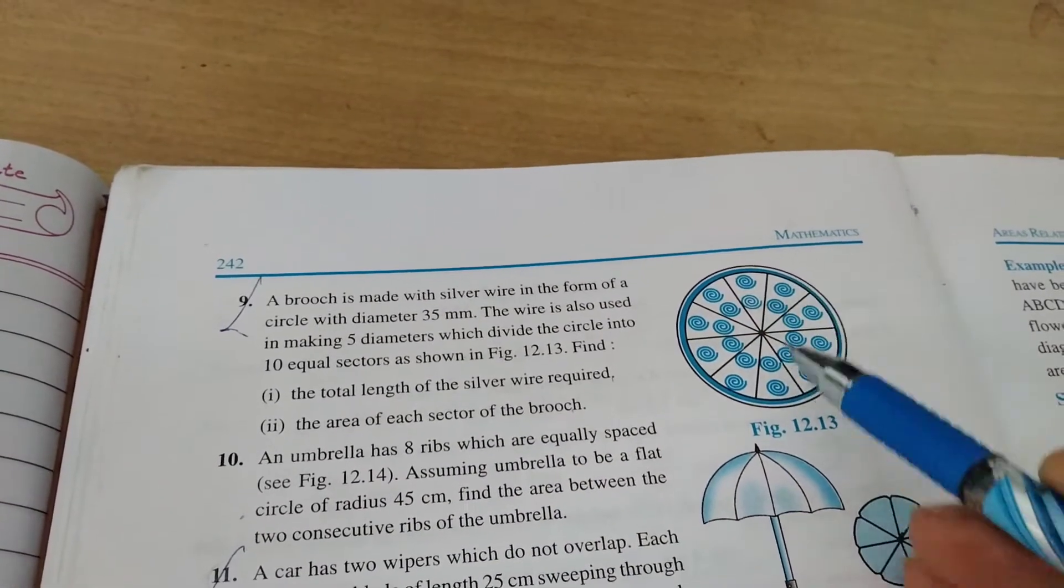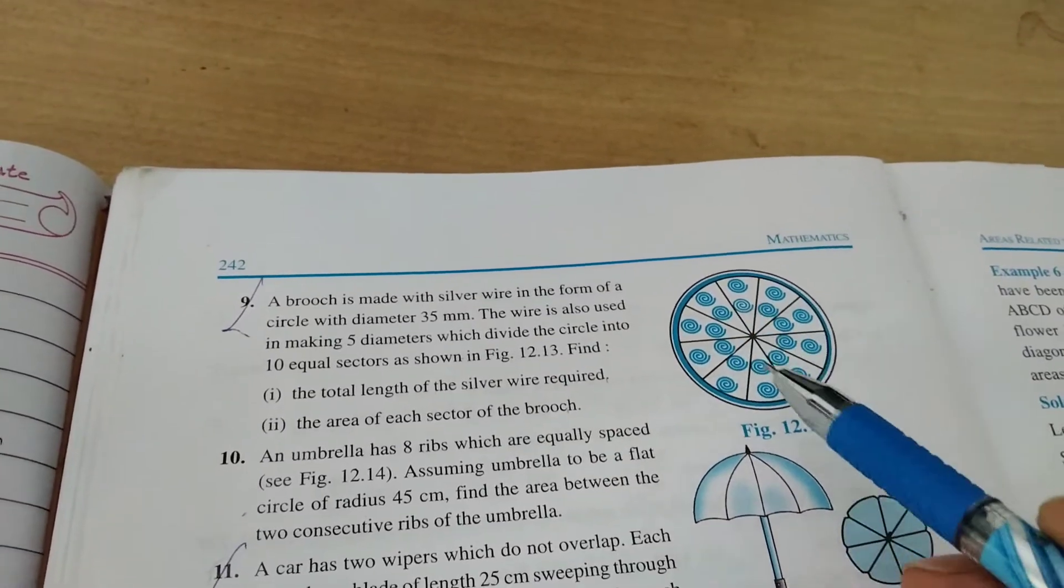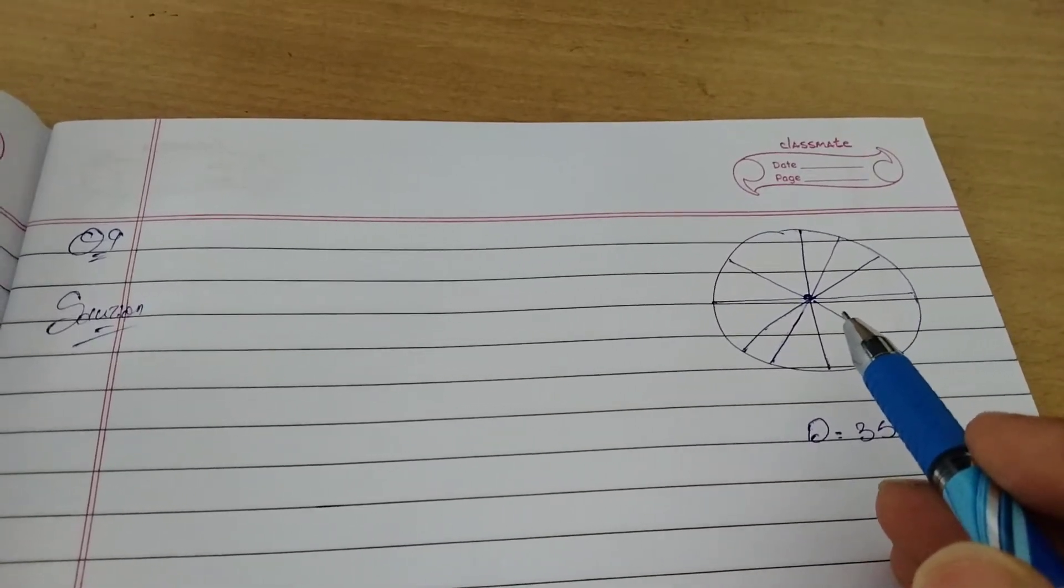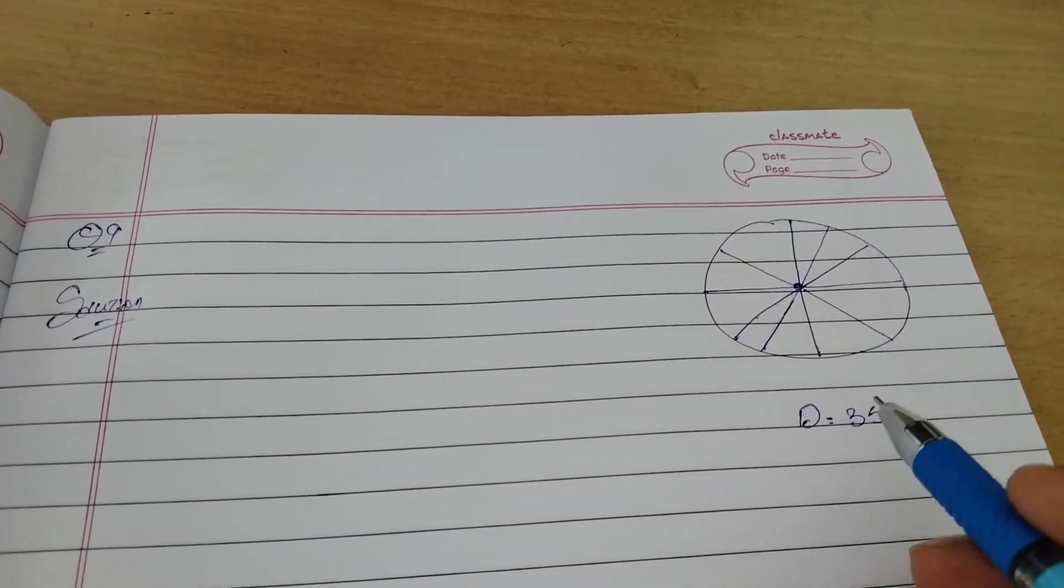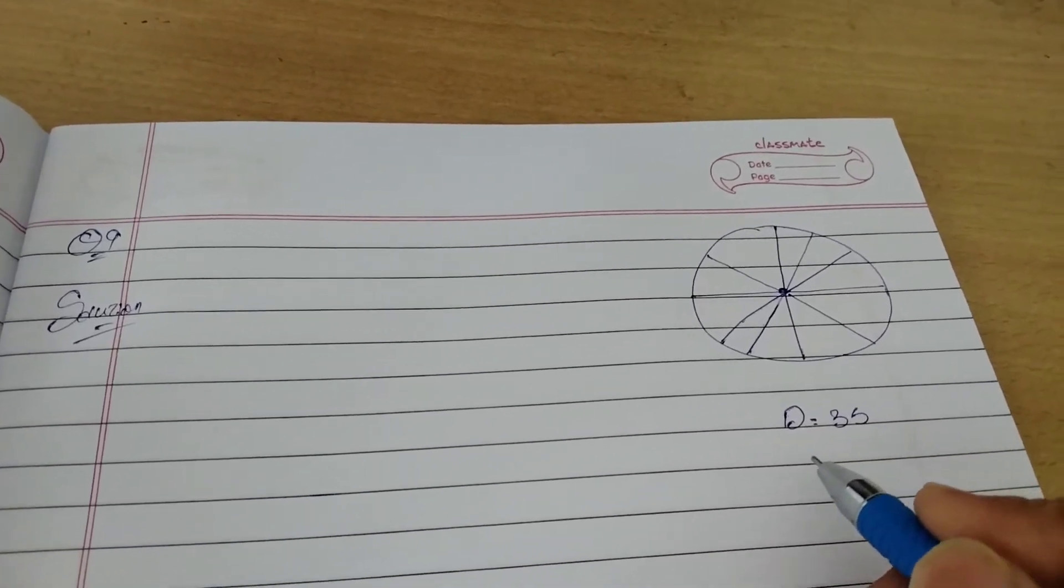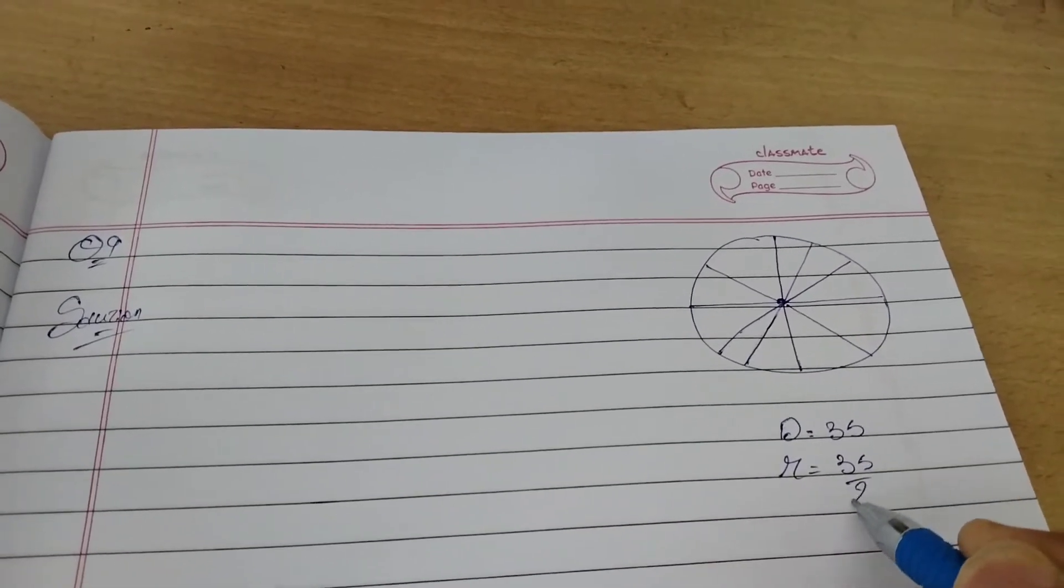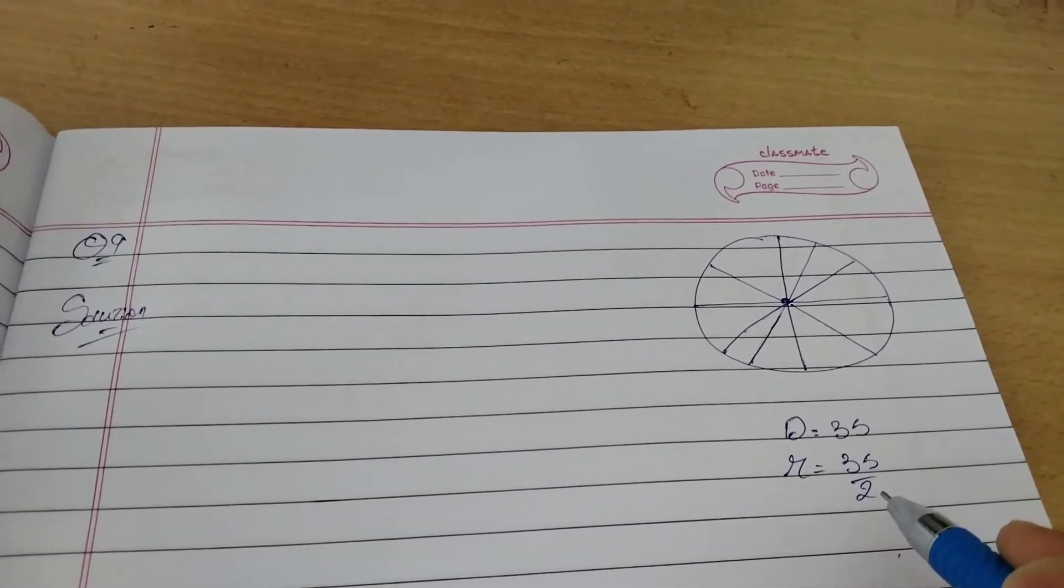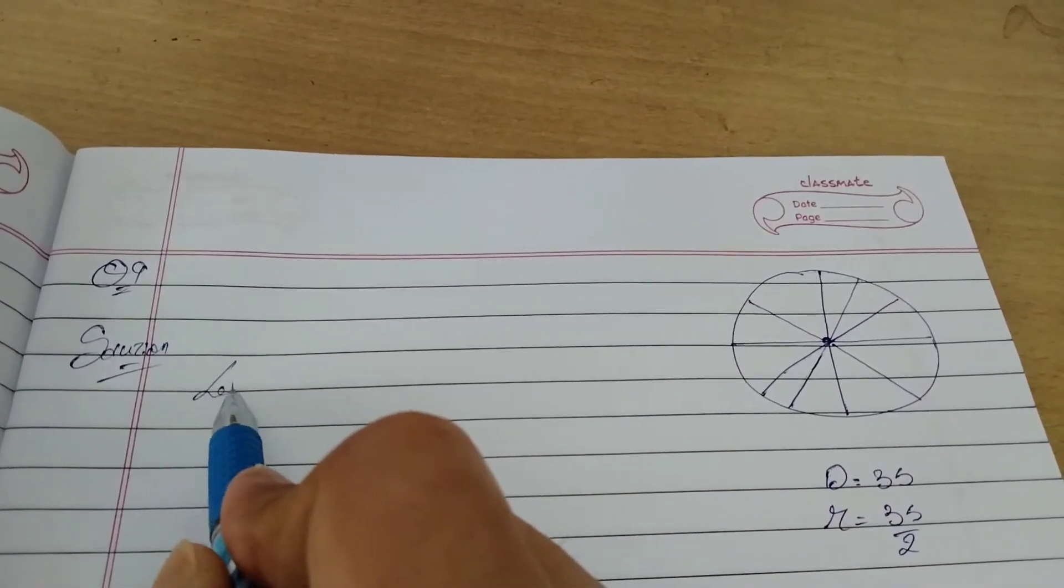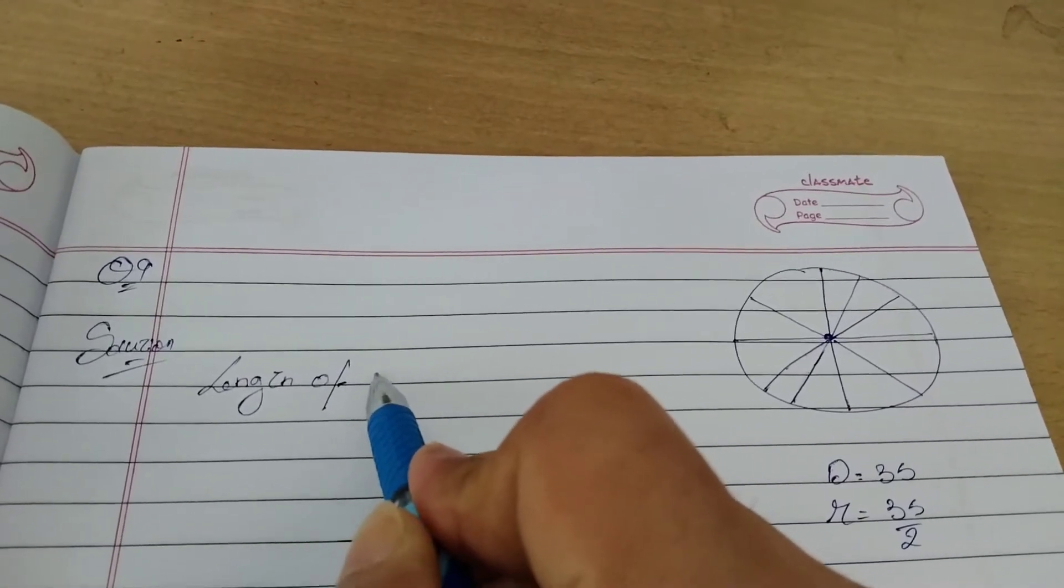So we are going to find how much wire is used and also the area of each sector of the brooch. Okay, let's start. I've made a rough circle like the one in the question. From the question we got diameter is 35, so diameter is 35 and how do you find radius? Radius is 35 by 2. Okay, let's start.